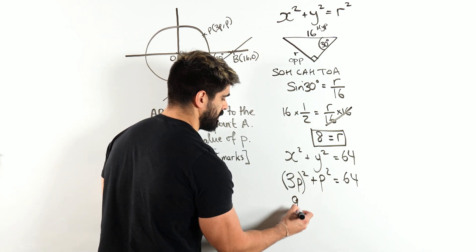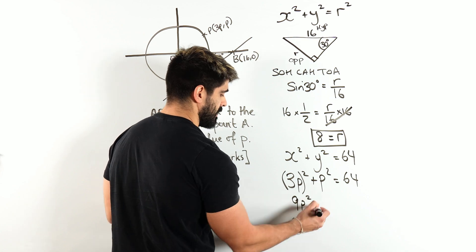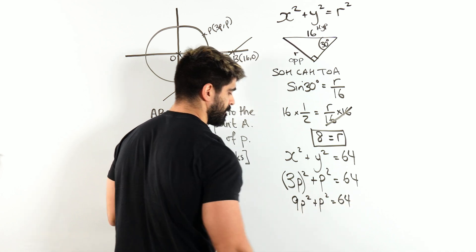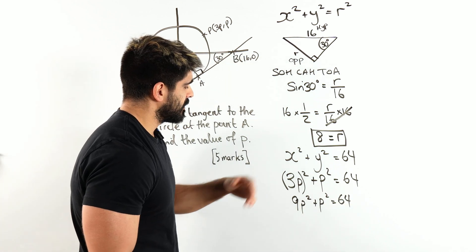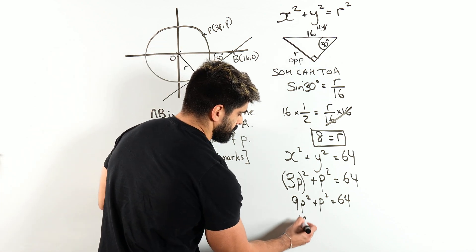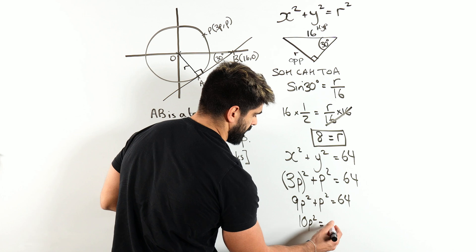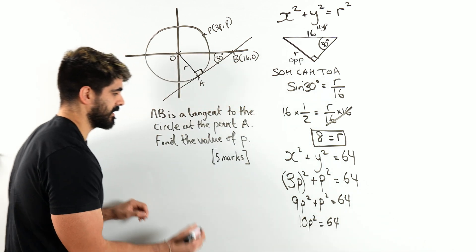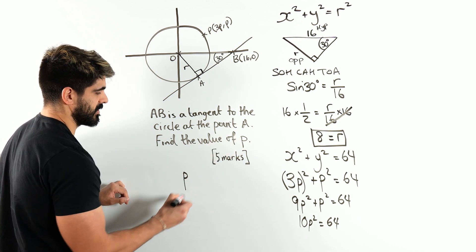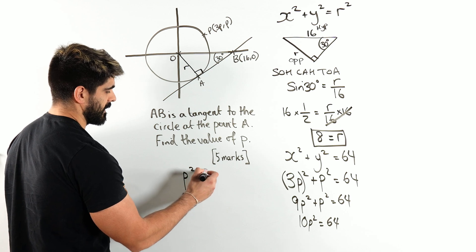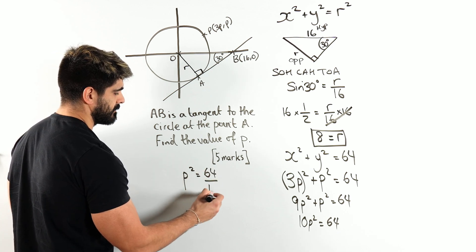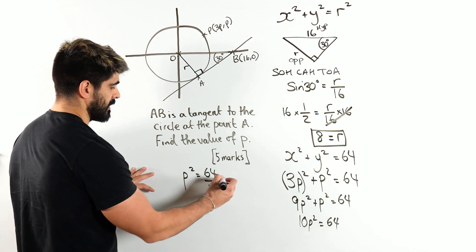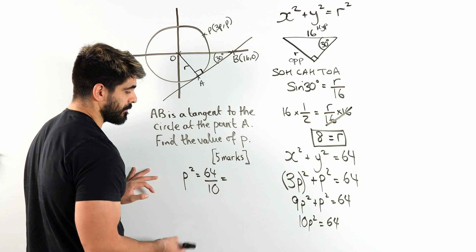Now we square it. 3 squared is 9, then we have p squared plus another p squared is 64. Adding them together, we get 10p squared equals 64. Divide by 10. Let's move over here. It'll be nice to write the answer down here. So p squared is 64 divided by 10, dividing by that coefficient, which you can obviously simplify. So dividing top and bottom by 2, we get 32 over 5.